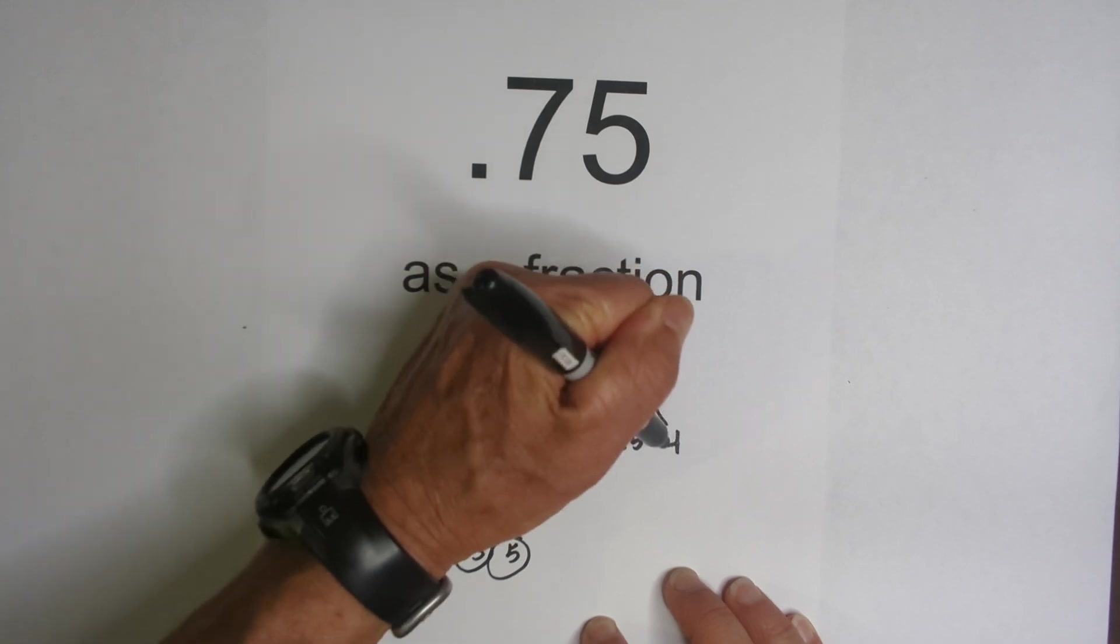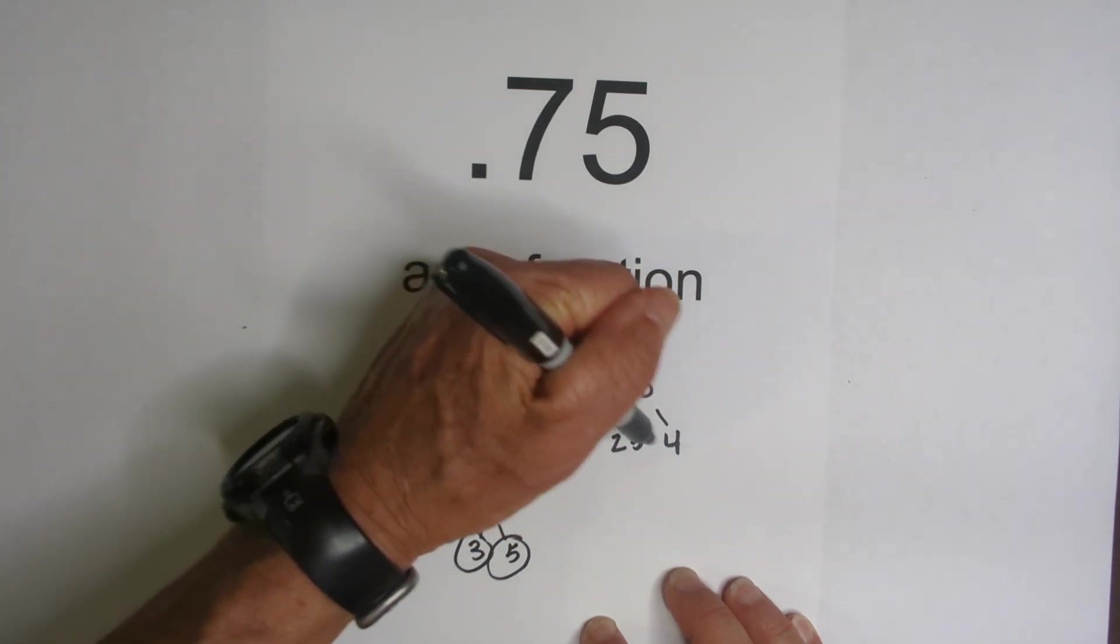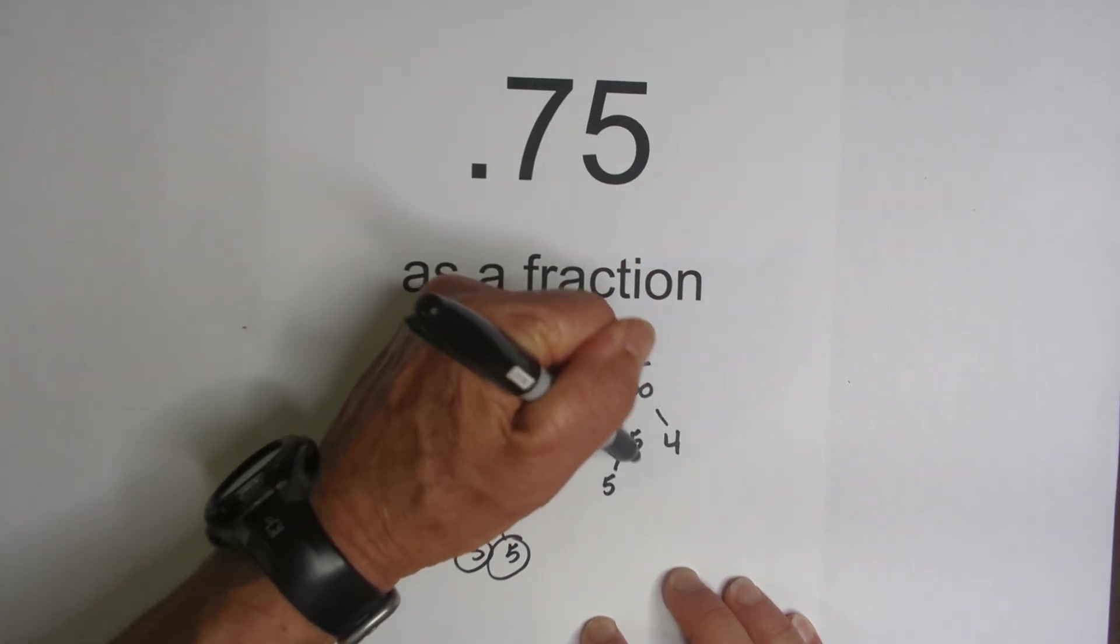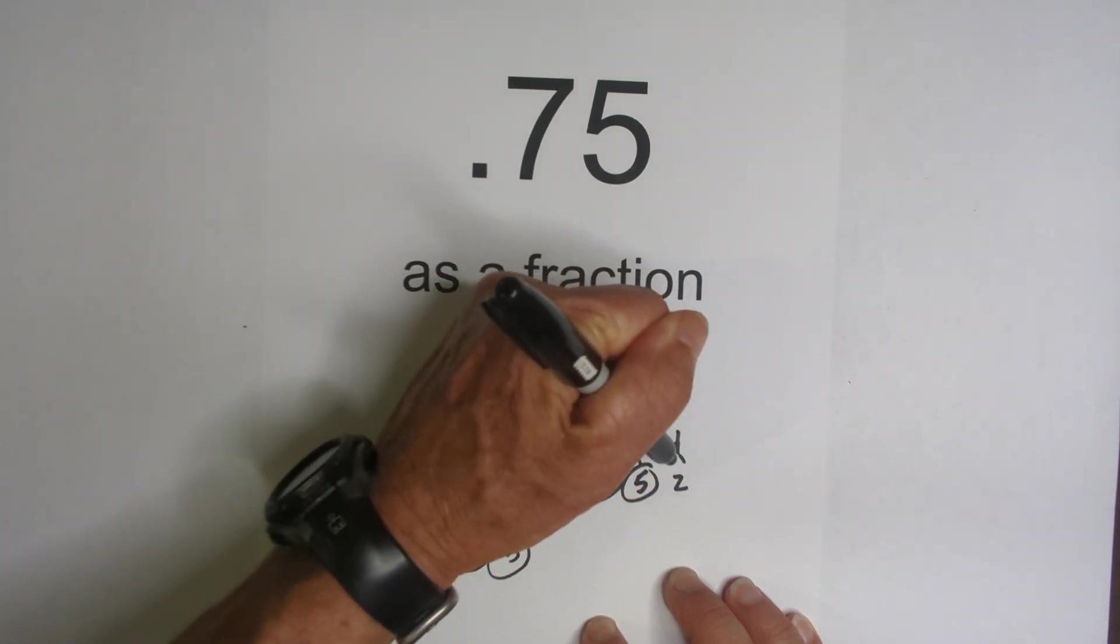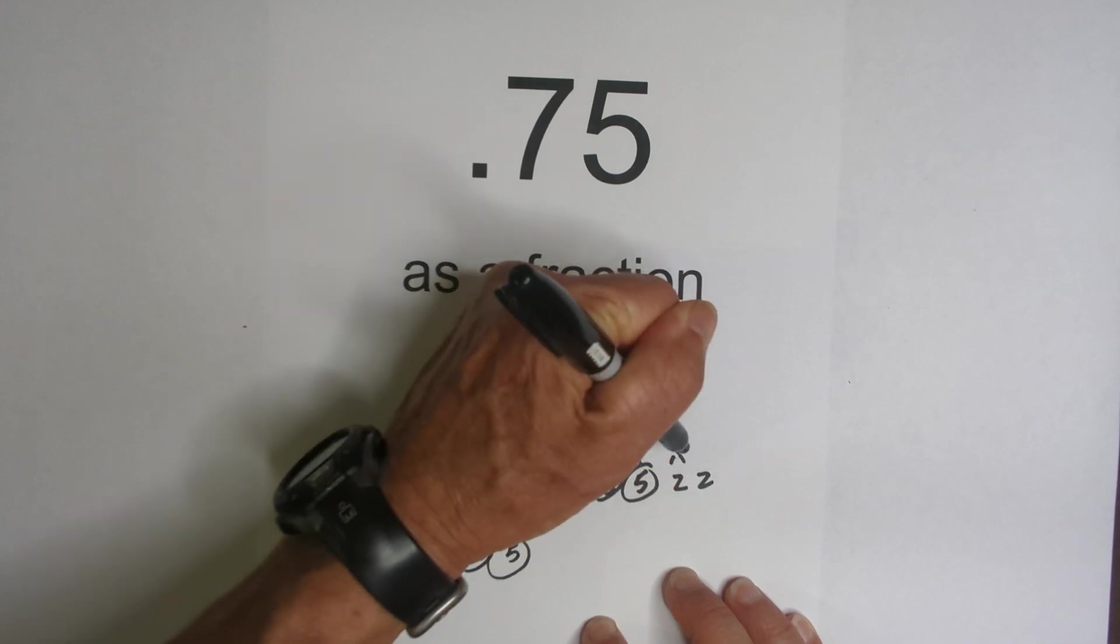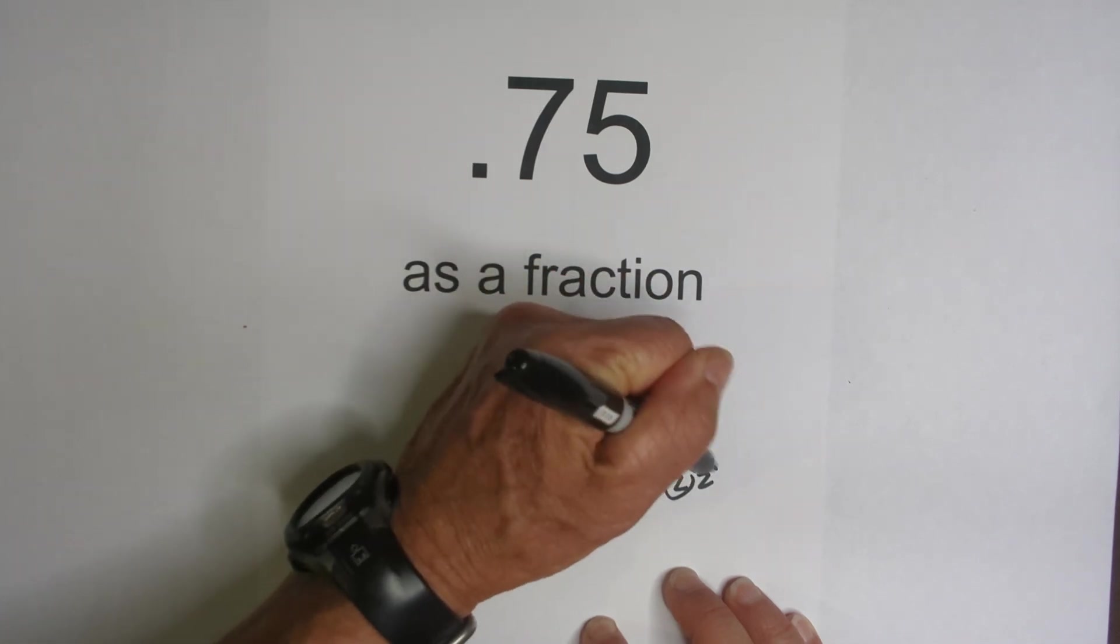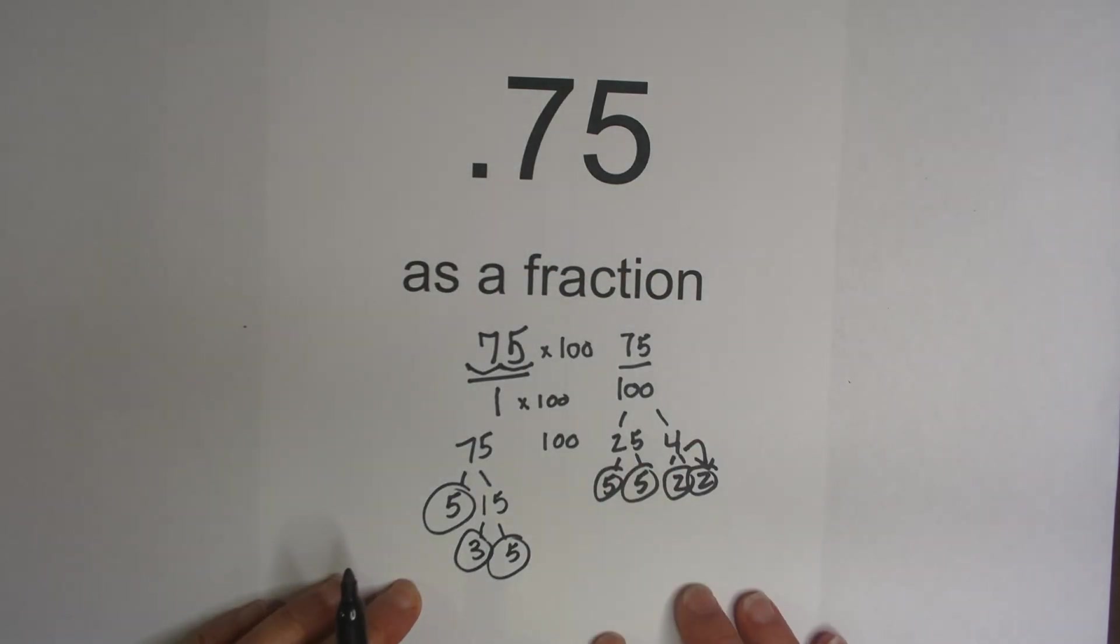Now 100. I know that 25 times 4 is 100. Then 5 times 5 is 25, circle the primes, and then 2 times 2, whoops, a little messy there, is 4. So we're down to prime.